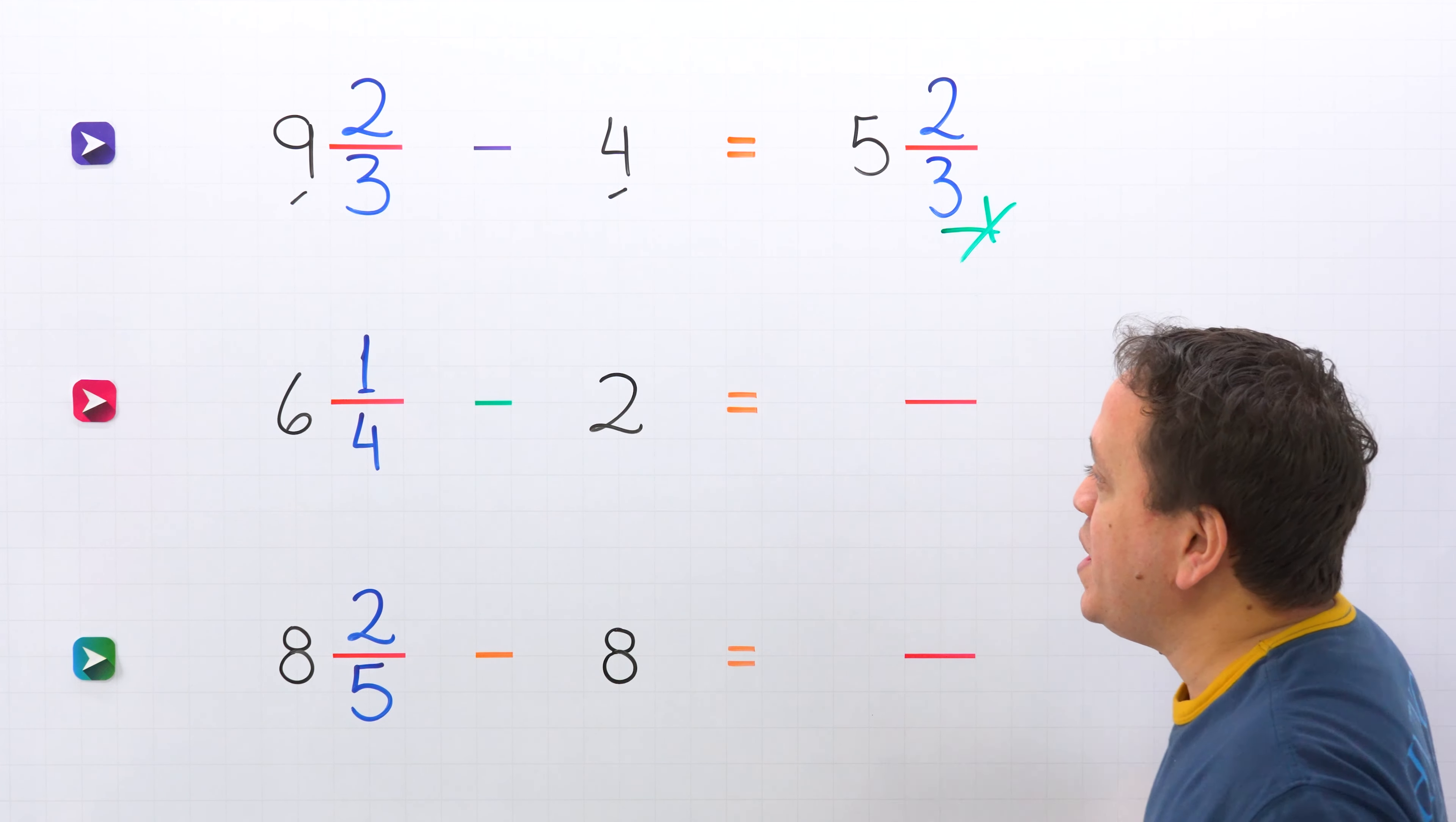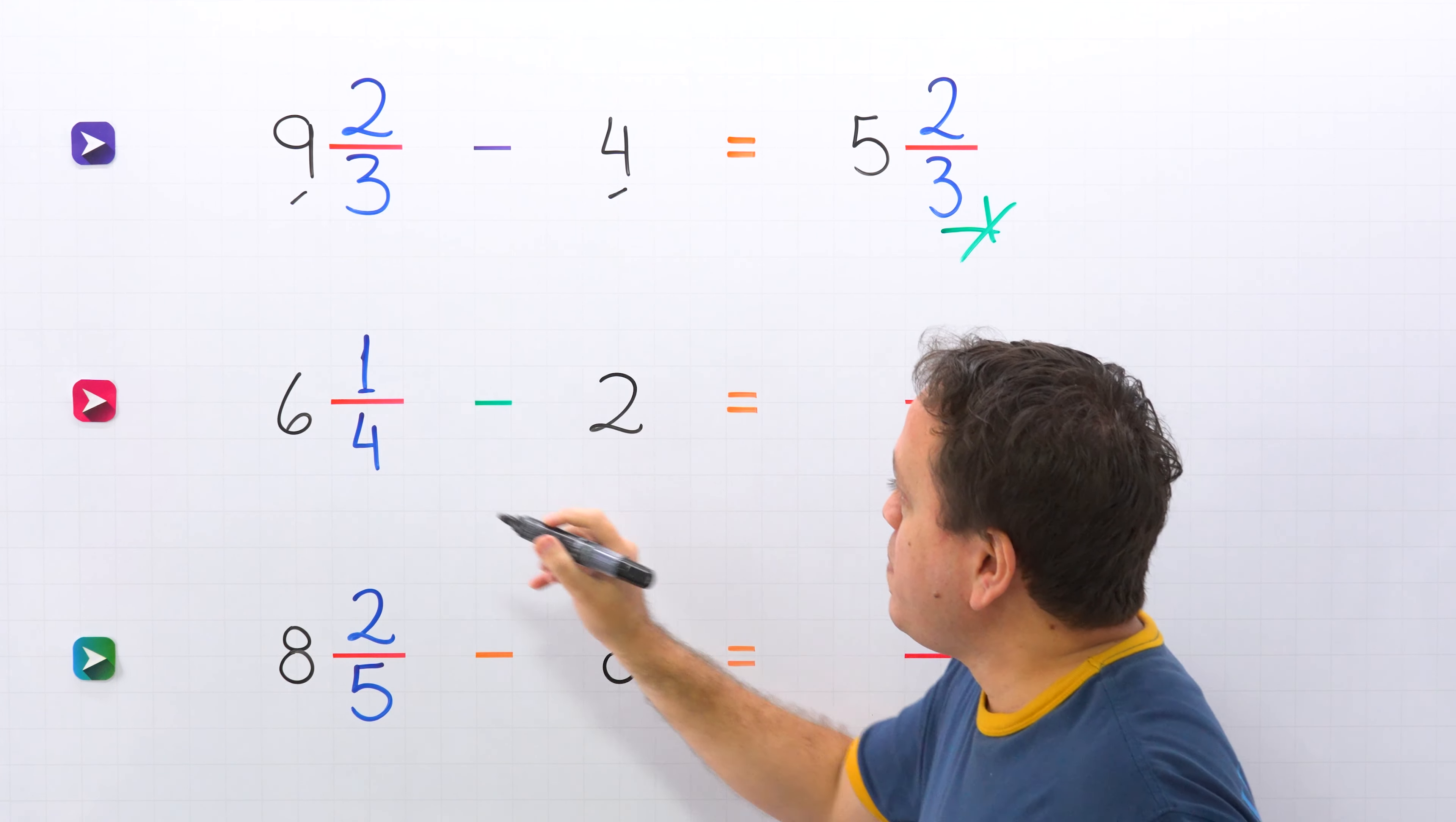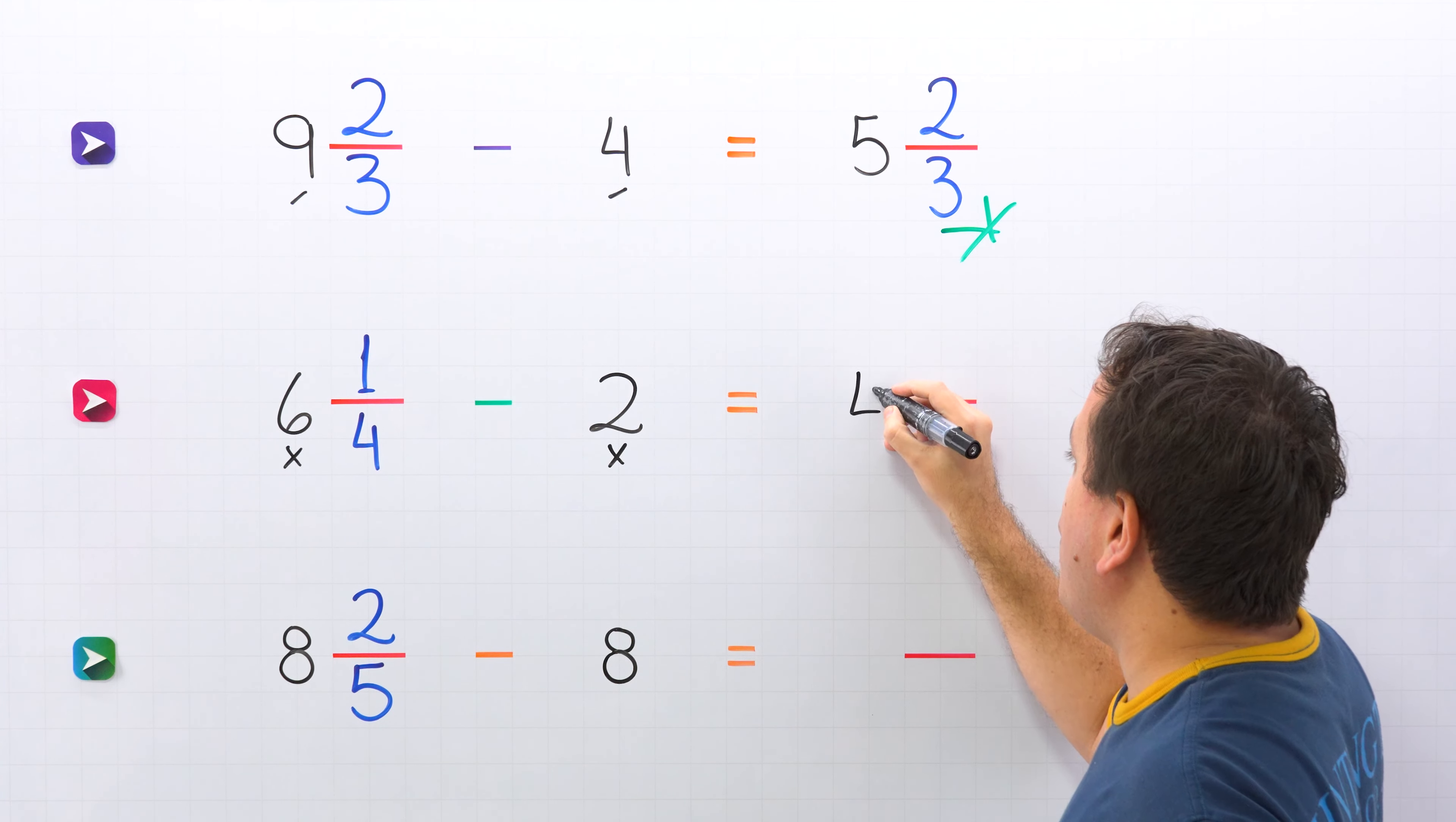Let's move on to the next example. In this example we need to subtract six and one fourth minus two. As usual we start by subtracting the whole numbers. In this problem the whole numbers are six and two. And six minus two gives us four.